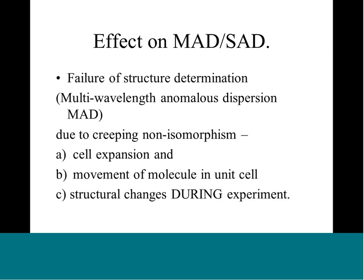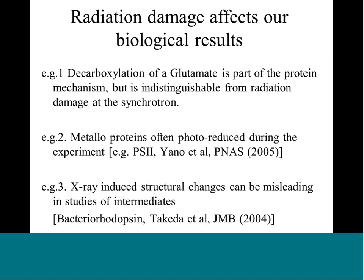The radiation damage will also possibly affect our biological results if we have a mechanism relying on an aspartate or glutamate at the active site, which will be decarboxylated by radiation damage. Metalloproteins will photo-reduce in the first few milliseconds of an experiment at 100 Kelvin. Photosystem II is a nice example of reduction of the manganese during the experiment. The Japanese group have spent many years untangling intermediates of bacteriorhodopsin to separate X-ray-induced artifacts from real structural intermediates with biological relevance.